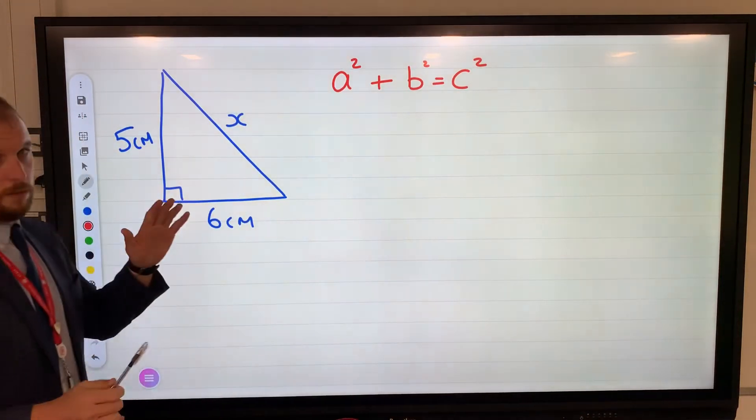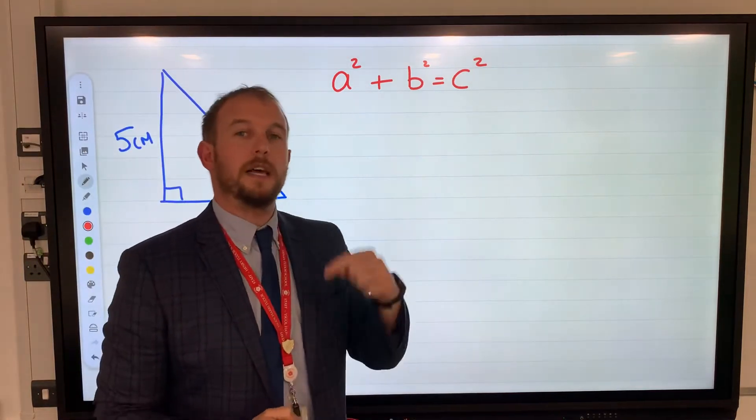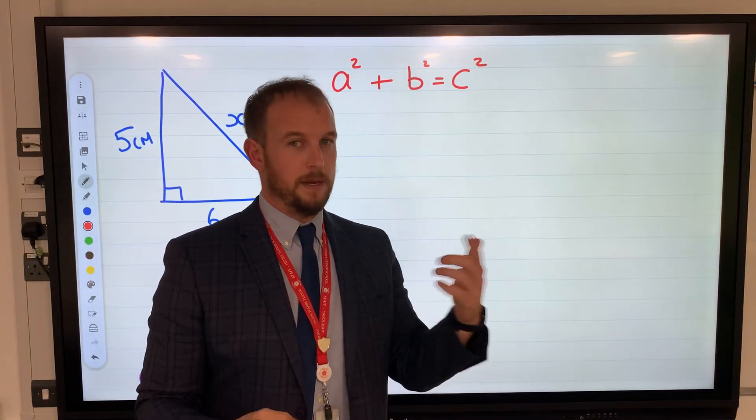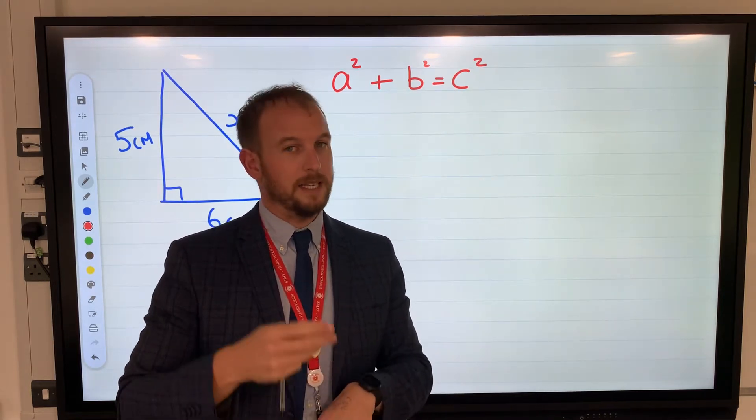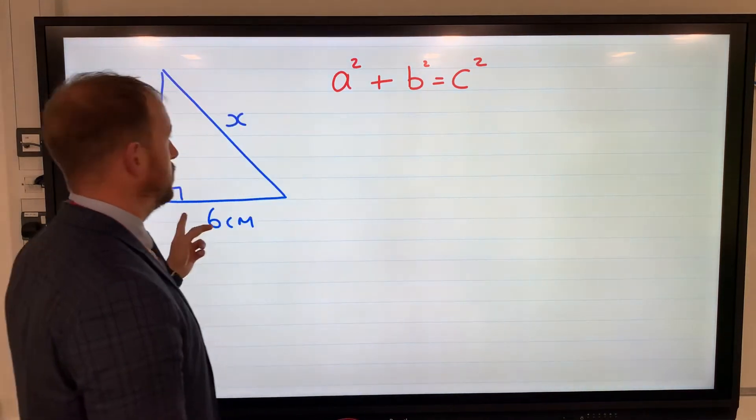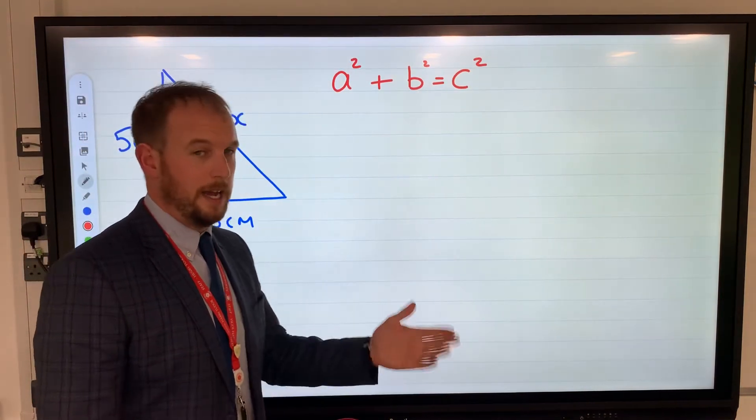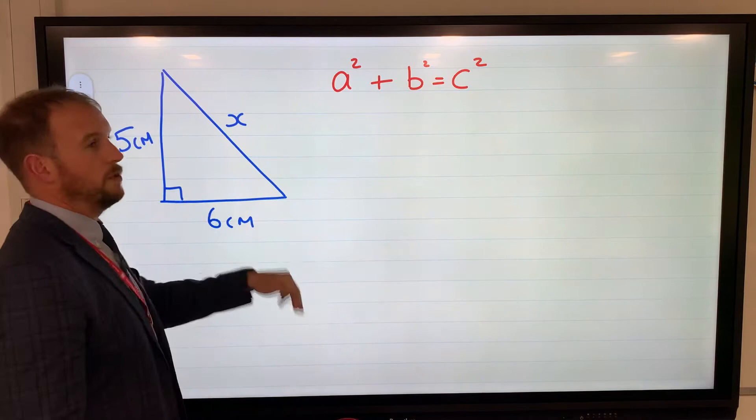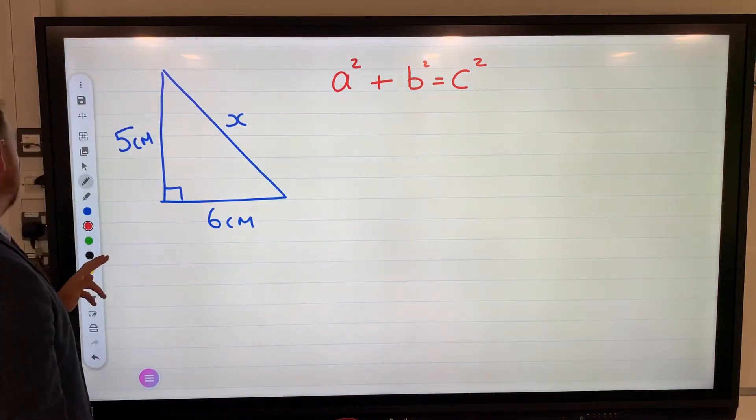Now this is not trigonometry. Be careful with these because trigonometry you need to use an angle - an angle and a side to calculate a missing side, or two sides to calculate a missing angle. You'll notice here we haven't got any given angles, we're not calculating any angles. It's two sides to work out a third side.